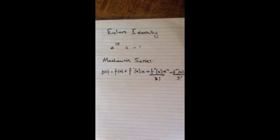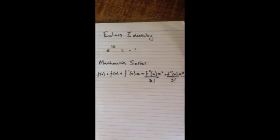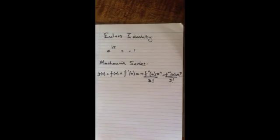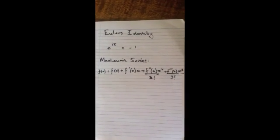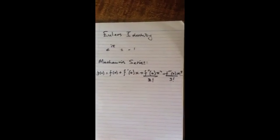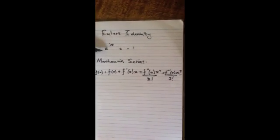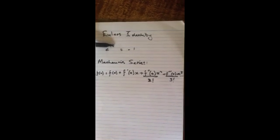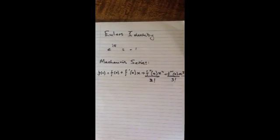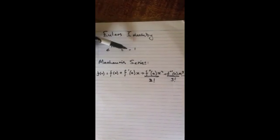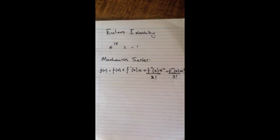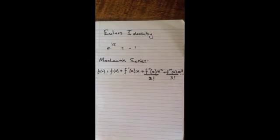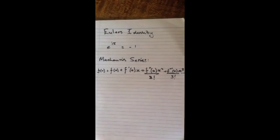Euler's Identity Proof, a Curtis McLeod and Rhys-Harm's production. Euler's Identity links mathematical constants e, i, and pi together in a way that equals negative 1. It is defined by e to the i pi equals negative 1.